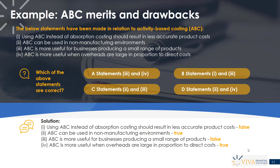Statement four: ABC is more useful when overheads are large in proportion to direct costs. Absolutely. In a modern manufacturing environment, overheads are a much bigger proportion of production costs, which is one of the reasons there's a need for activity-based costing. In a traditional manufacturing environment, most costs tended to be direct costs, so the small amount spent on overheads didn't require detailed analysis. However, when overheads are much larger in proportion to direct costs, we need a thorough understanding of those costs — the different activities, cost drivers, what drives them — to get accurate production costs per unit. So that final statement was true. Statements two and four were the correct ones, giving us answer D.